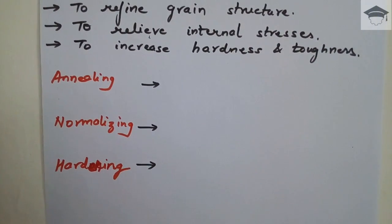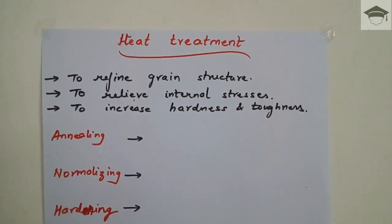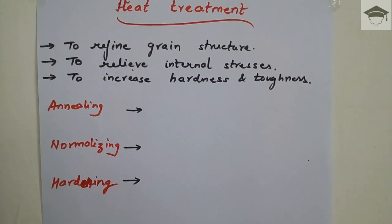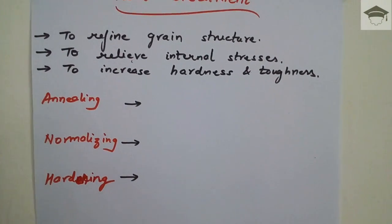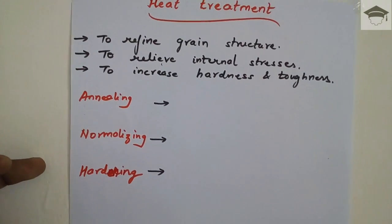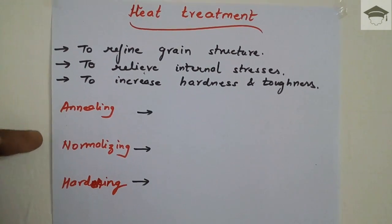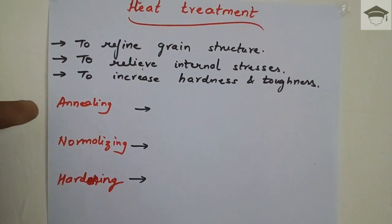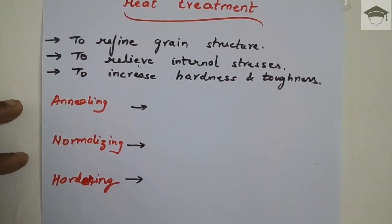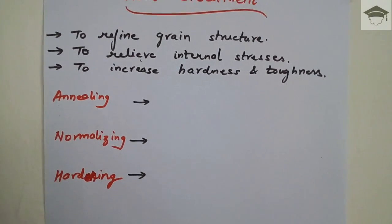The choice of process — annealing, normalizing, or hardening — depends entirely on the requirement: whether we want to improve grain structure, relieve internal stress, increase toughness, increase hardness, or any combination of these. These three processes can also be applied consecutively — for example, first annealing, then normalizing, then hardening — or only one or two processes can be used based on the specific requirement.